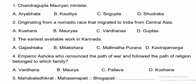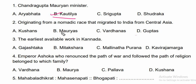First, we start with Chandragupta Maurya. The minister of Chandragupta Maurya is Kautilya. Originating from the nomadic race that migrated to India from Central Asia — the correct answer is option A: Kushans.